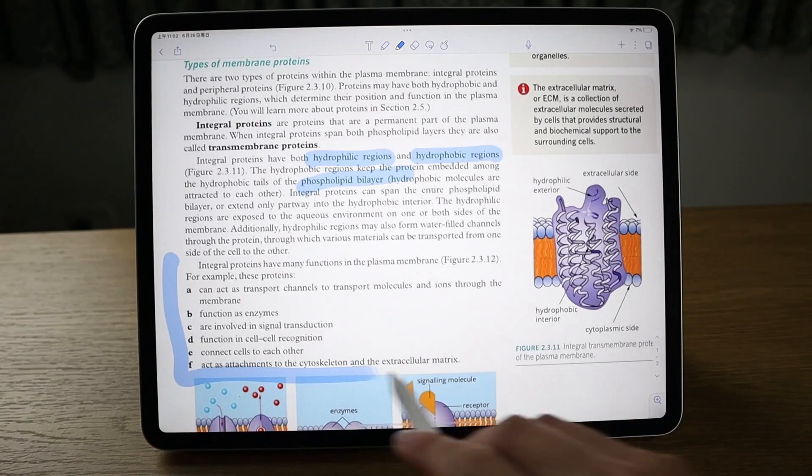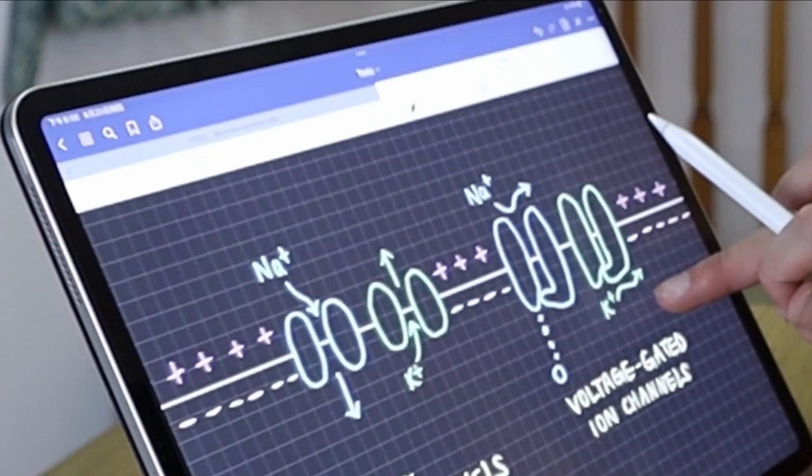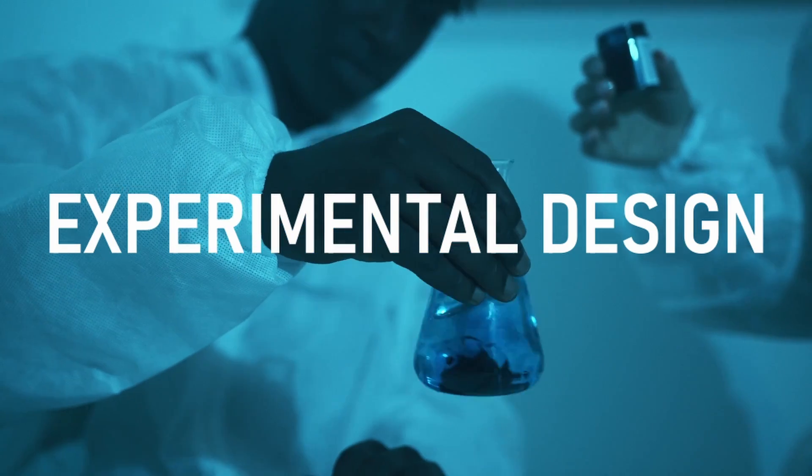So for most science subjects, there has been a shift from more rote learning to more application-styled questions on the final exam. And one of the most common types of application questions involves experimental design.